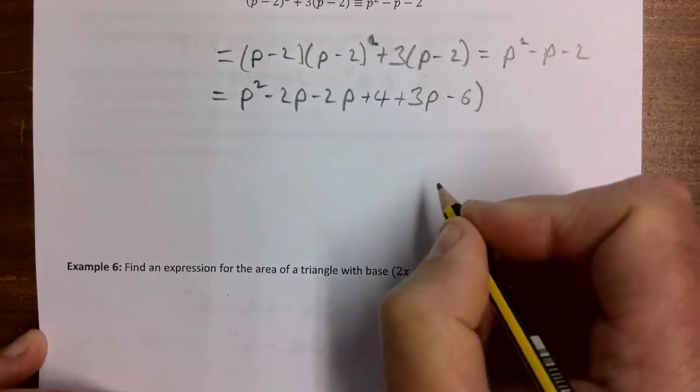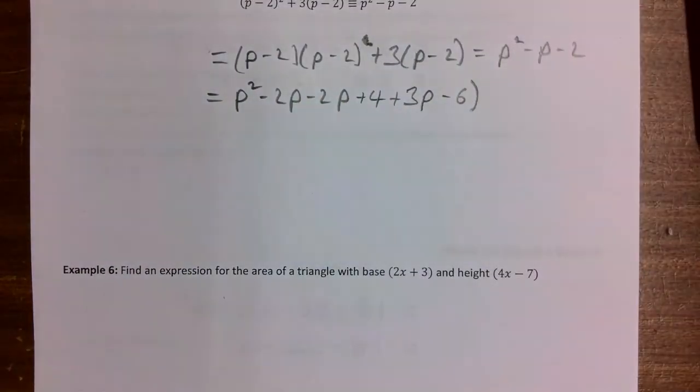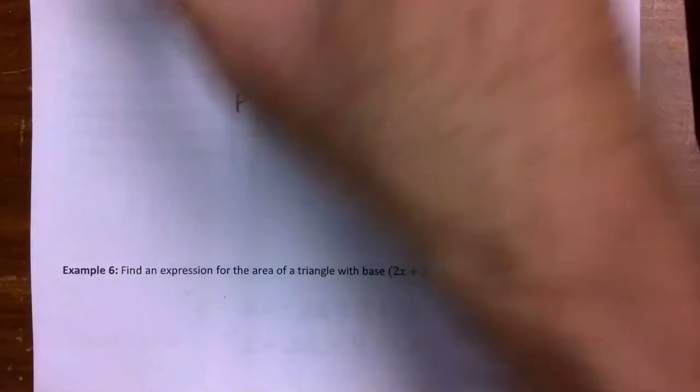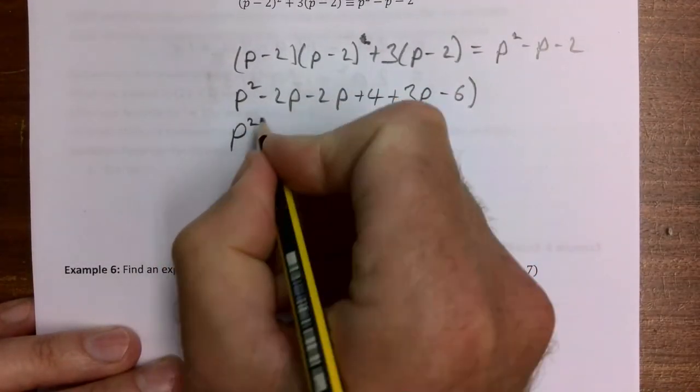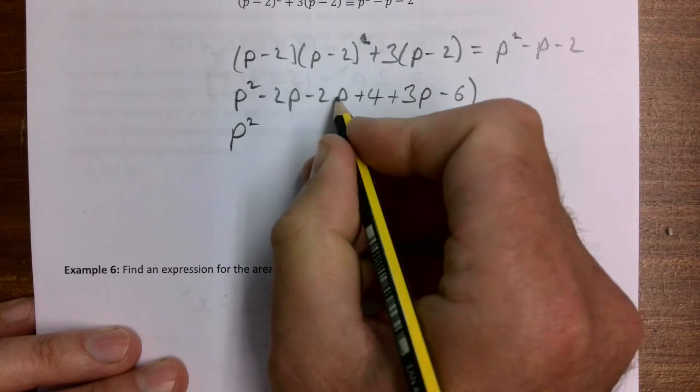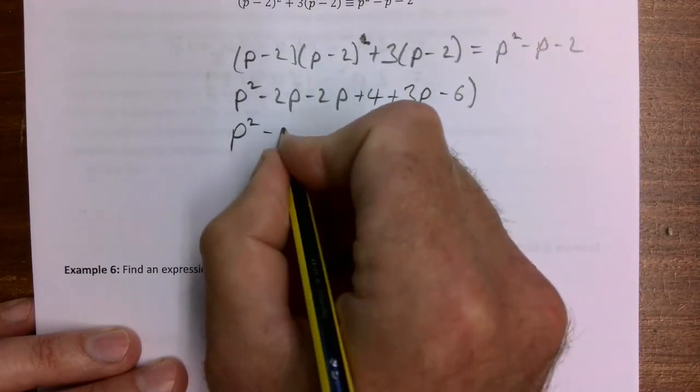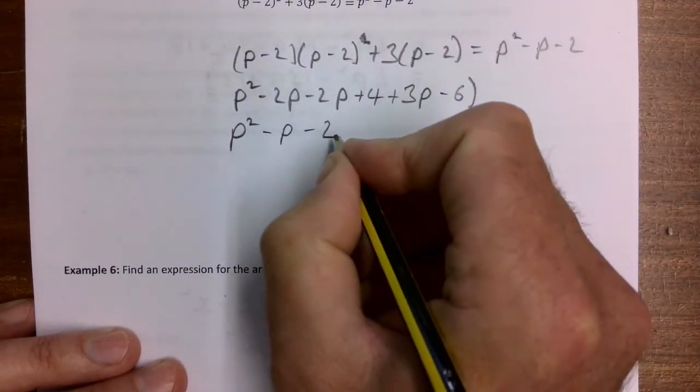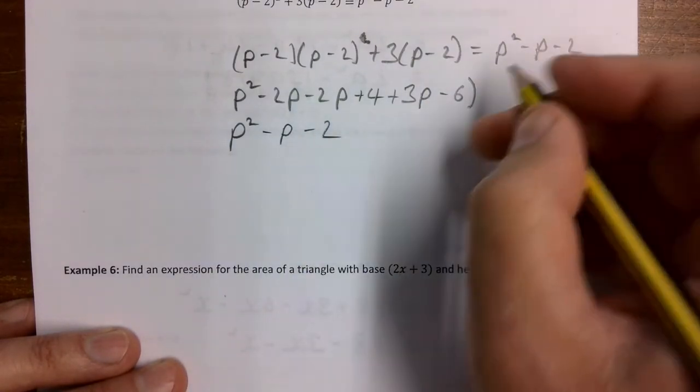Let's see what it gives us. I'm not liking my equal signs here actually, let's get rid of those as well. We should be okay. So we have p squared minus 2p minus 2p, that gives me minus 4p plus 3p, so that just gives me minus p, and then minus 2. And as you can see, that is what's on the right hand side, so that's it proven.